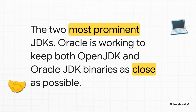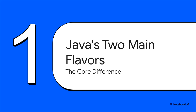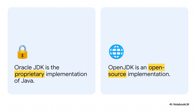First things first, let's get one thing straight. We're talking about the two heavyweights in the Java world, and Oracle has been working hard to make them almost identical under the hood. For the most part, especially with the newer versions, they're functionally the same. But a few key differences are still there, and that's where your choice really starts to matter. It all comes down to their basic philosophy. Oracle JDK is a proprietary, commercial product from Oracle, and OpenJDK? That's its fully open-source cousin. Just about every other difference stems directly from this one simple fact.